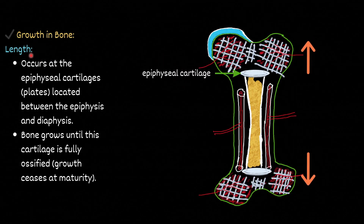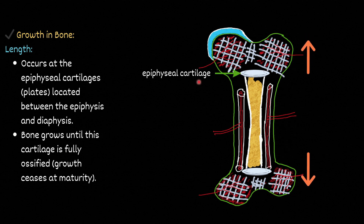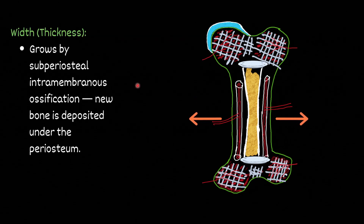Growth in length occurs at the epiphyseal cartilages, located between the epiphysis and diaphysis. The longitudinal growth of bone occurs due to growth at the epiphyseal cartilage. Bone grows in length until this cartilage is fully ossified and growth stops at maturity. Width or thickness grows by subperiosteal intramembranous ossification — new bone is deposited under the periosteum, increasing the width or thickness of the bone.